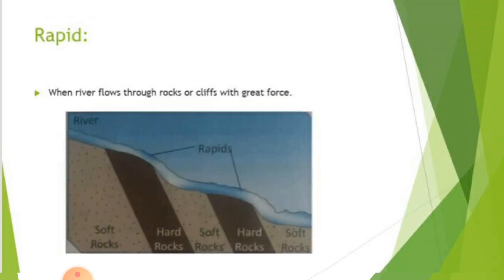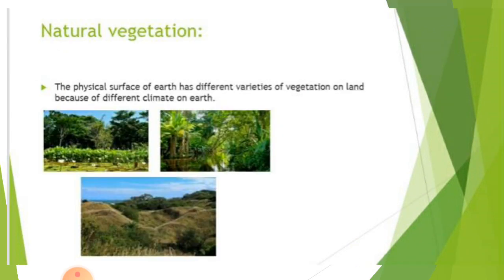Rapids: when a river flows down through rocks or cliffs, the water comes down with great speed. This great force of the river is known as rapids. It is extremely dangerous to swim in rapids.